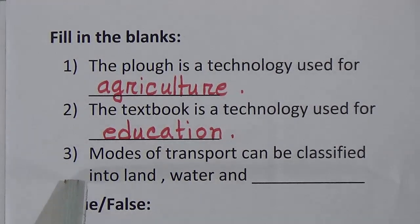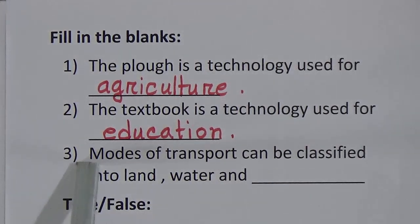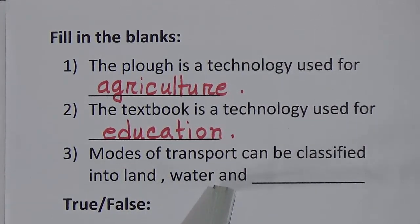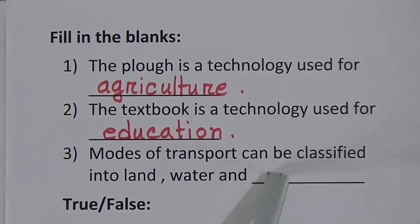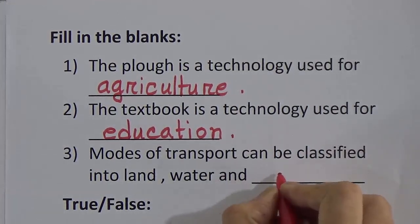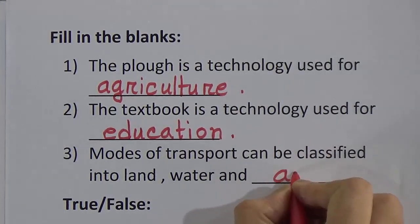Number three fill in the blanks: modes of transport can be classified into land, water, and — the answer is air. So we will write here: air.